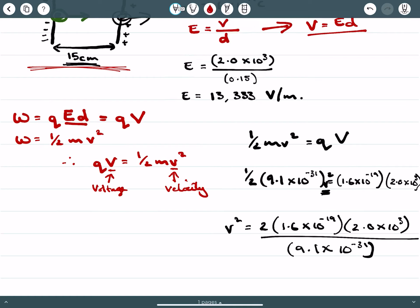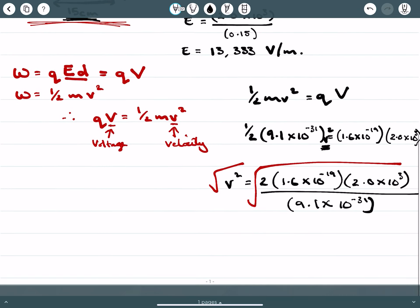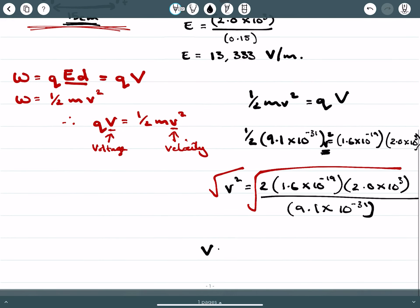And then, if we find that value, we're going to square both sides, and we can get that in terms of v. So v here is given as 2.65 times 10 to the 7 meters per second.